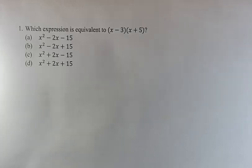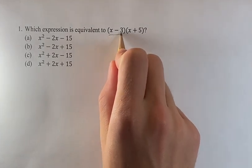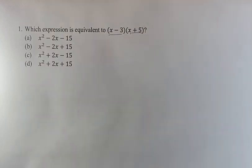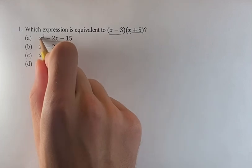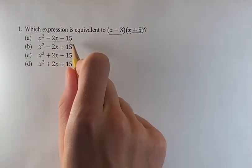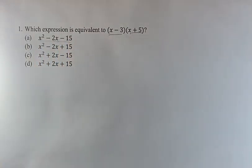Hello and welcome back to another video. Today we're going to be multiplying these two terms and we're going to be trying to get it into the form of one of these expressions where the x squared term is on its own, the x term is on its own, and the constant is on its own.